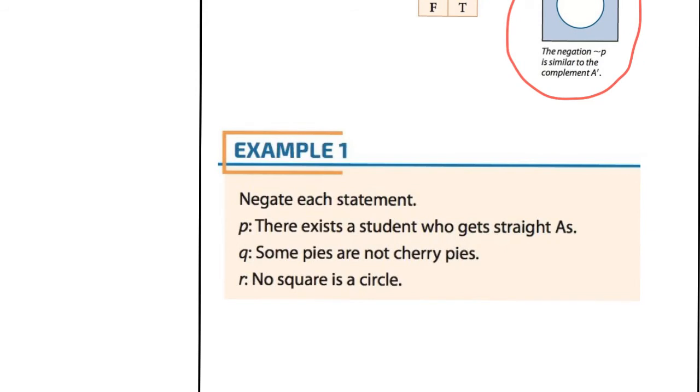Let's negate each statement. The first one, there exists a student who gets straight A's. The negation would be no student gets straight A's because the statement says there is one. If we say no student gets them, then we've negated it. For the conditional Q, some pies are not cherry pies. To negate it, we could say all pies are cherry pies. That negates that.